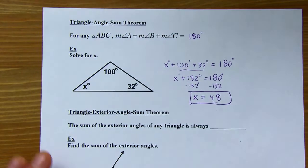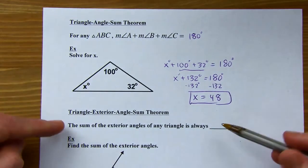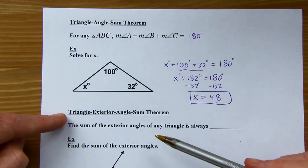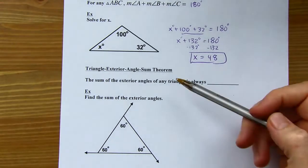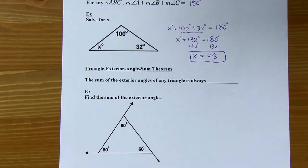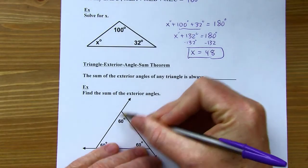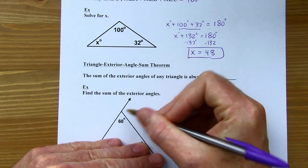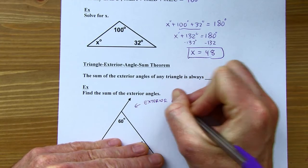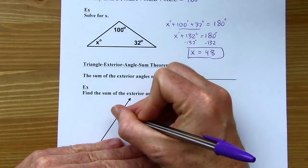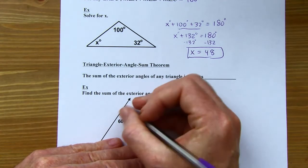The triangle angle sum theorem is about interior angles — inside the triangle — but we also have a triangle exterior angle sum theorem. An exterior angle is formed when you extend one of the lines at a corner. Since this interior angle is 60 degrees and we've got a linear pair totaling 180 degrees, the exterior angle is 120 degrees.